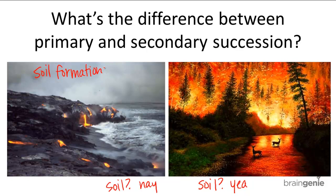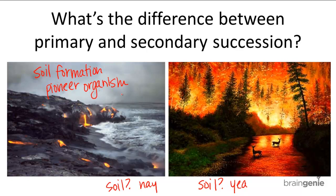The first organisms to colonize the area are called pioneer organisms. This makes sense — pioneers are the first types of people to colonize an area. So pioneer organisms are the first organisms to colonize a destroyed or newly formed land, and they are generally mosses and lichens, which are spore-bearing plants because spores are light and easier to carry by the wind.